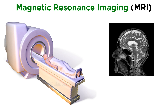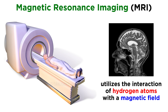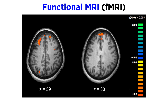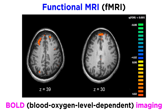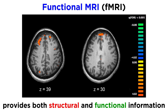A related technique is called magnetic resonance imaging, or MRI. This utilizes the way that hydrogen atoms interact with a magnetic field to produce images. Of particular importance to biopsychology is functional MRI, or fMRI, which identifies the regions of the brain experiencing increased oxygen usage. We can refer to this as BOLD, or blood oxygen level dependent imaging. This technique is very practical because it provides both structural and functional information, all without injecting anything into the patient.